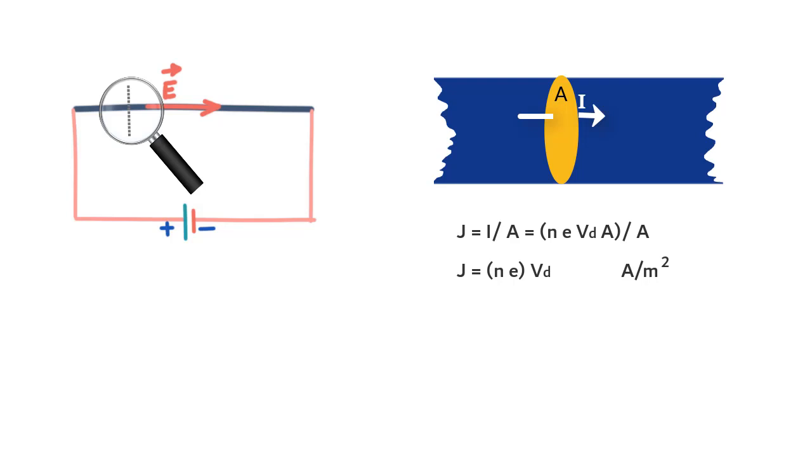We could also define a vector current density J, that takes into account the direction of the drift velocity vector Vd, and in that case J can be written as vector J is equal to N e Vd, where Vd is a vector.